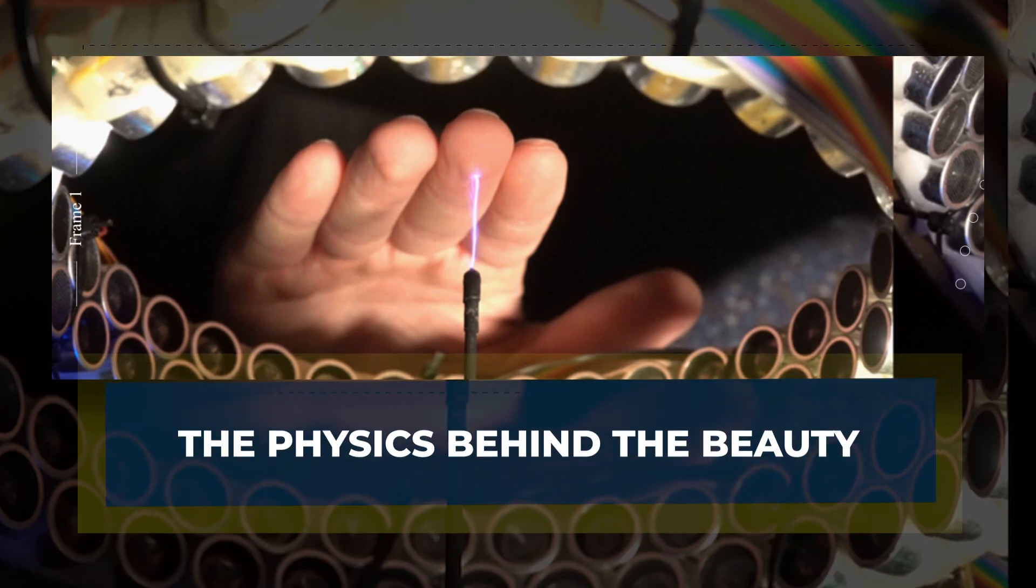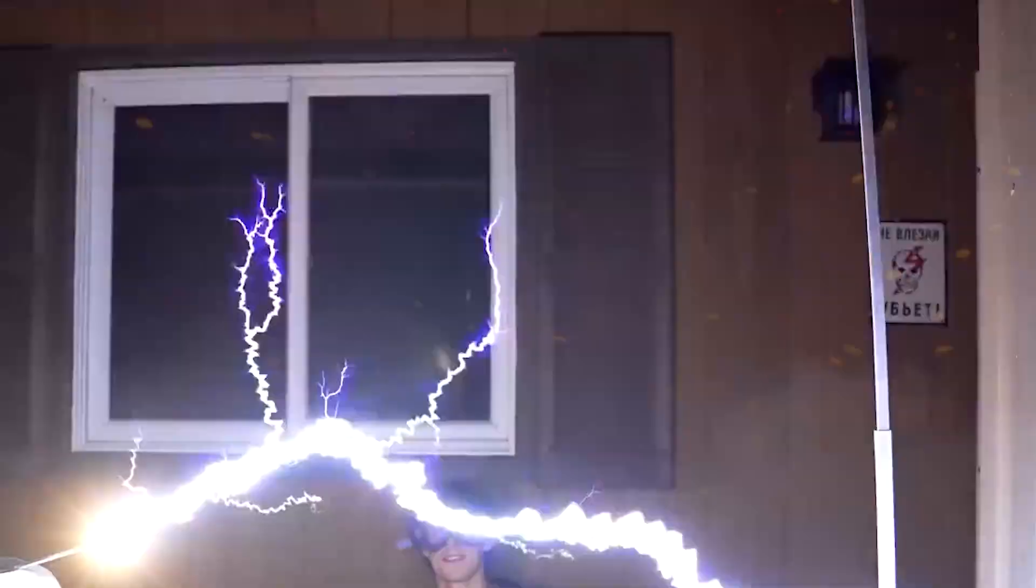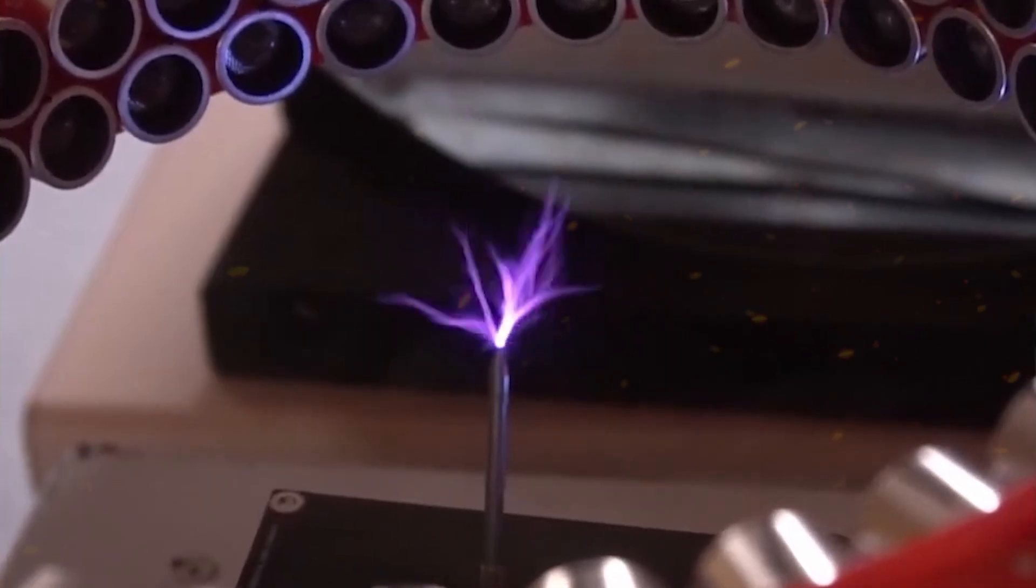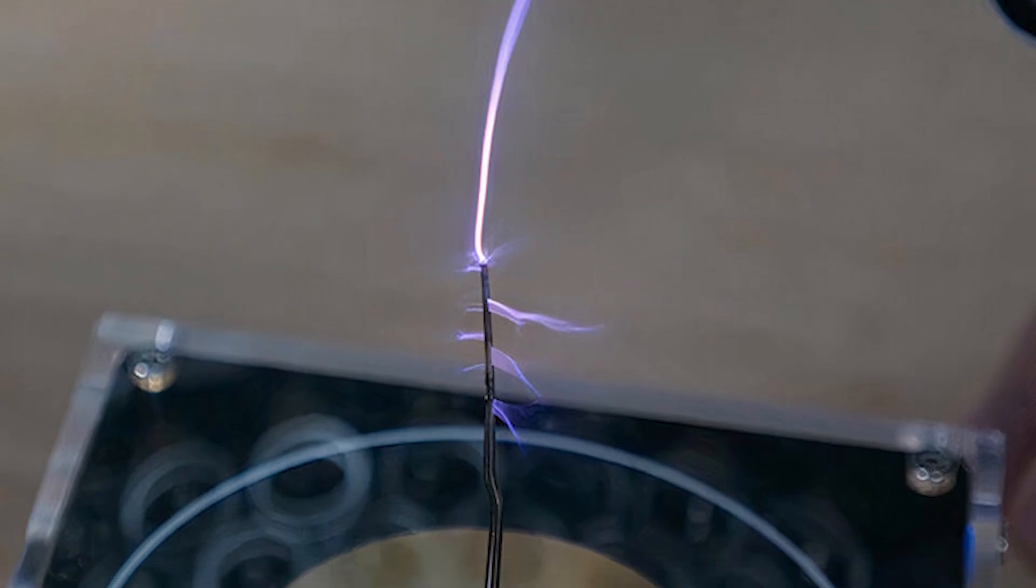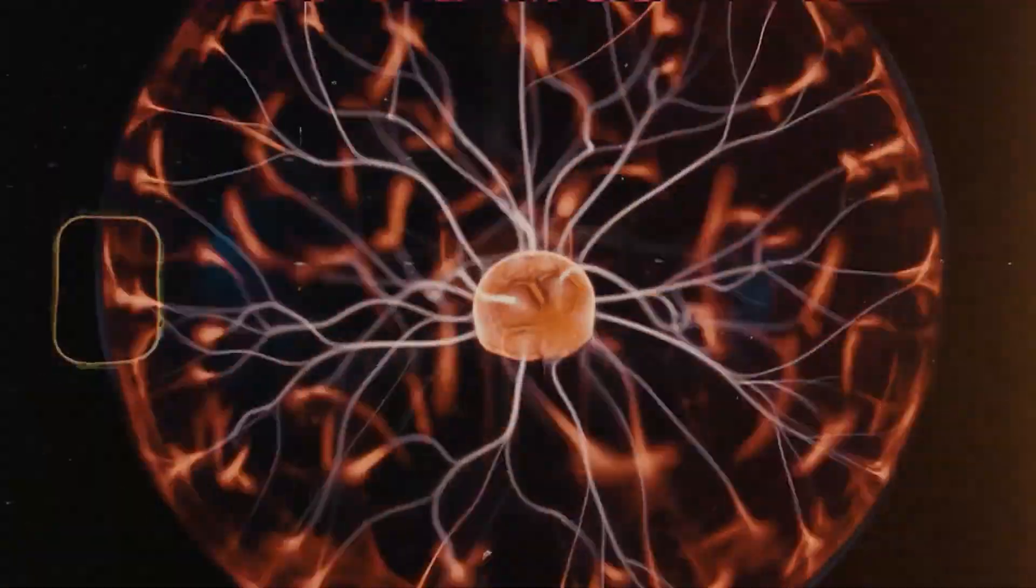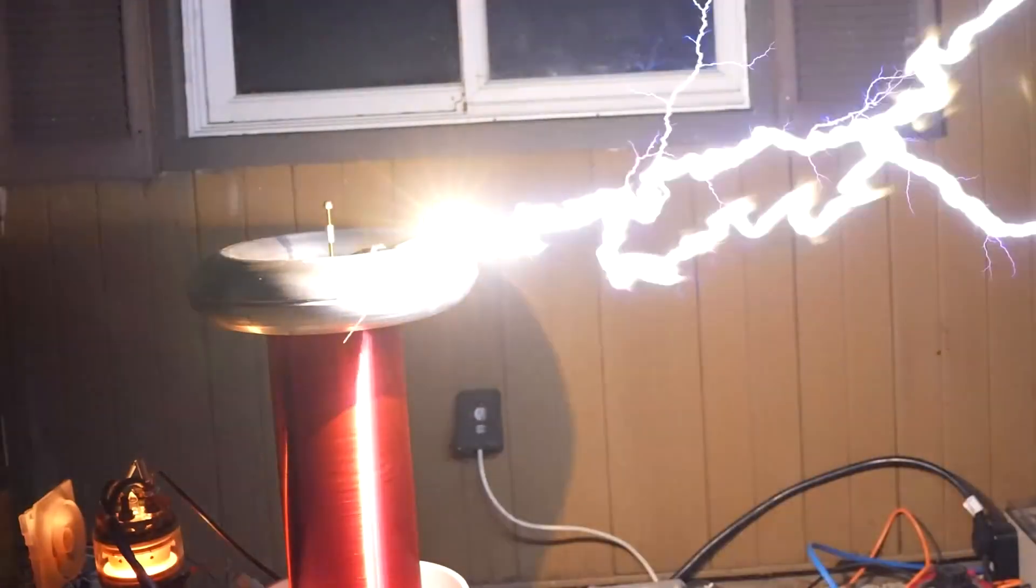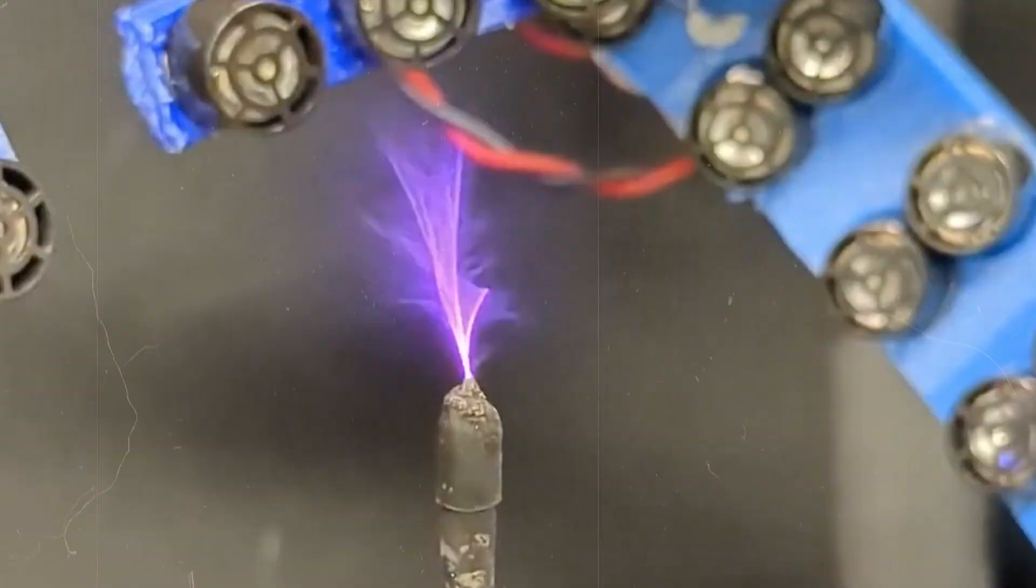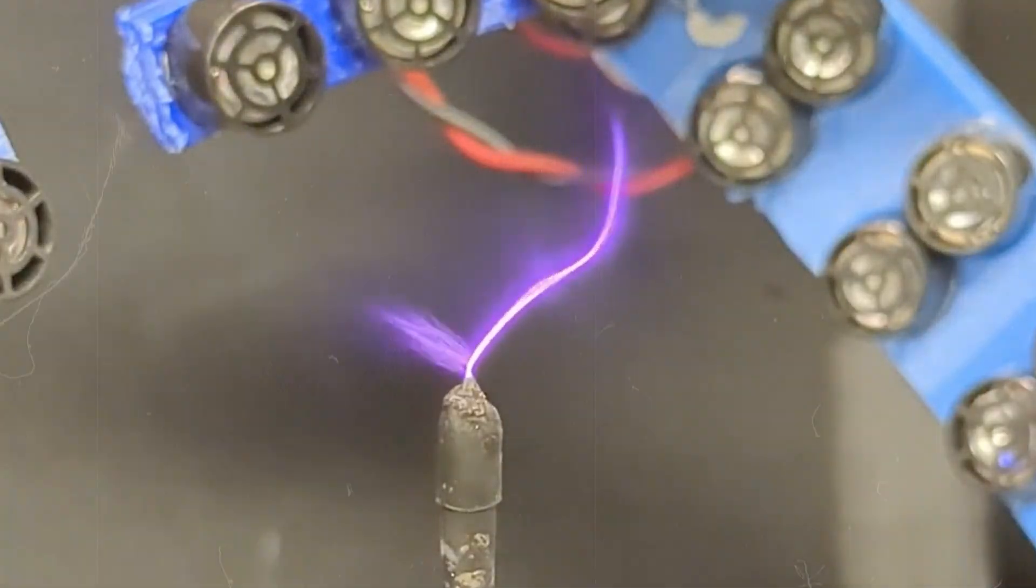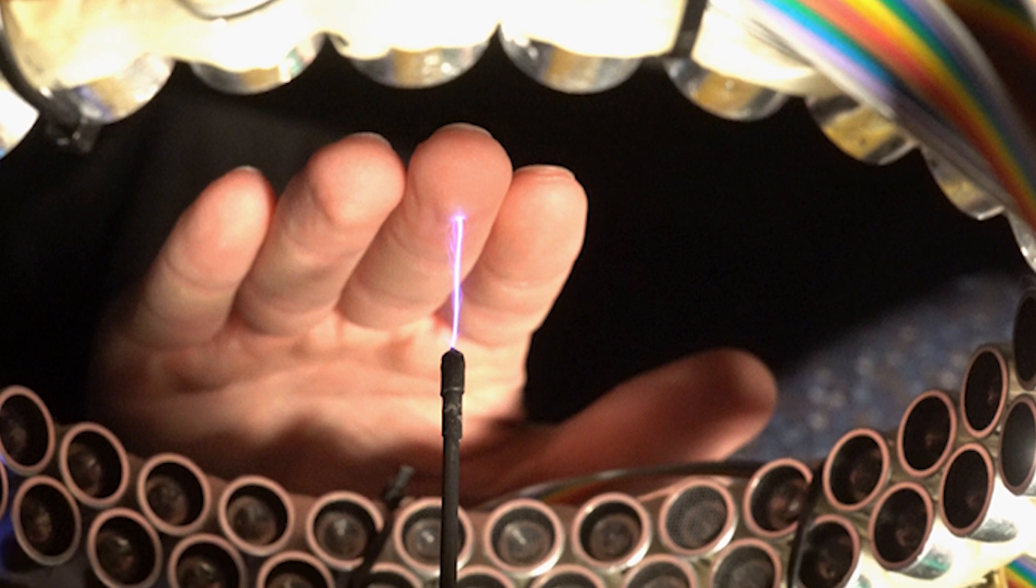The physics behind the beauty: At its heart, this experiment is a demonstration of energy interaction across scales. The ultrasonic field operates at tens of kilohertz, far below the frequencies of light, but powerful enough to move air molecules. The Tesla coil, on the other hand, operates at high voltages that excite electrons and form plasma. These two forces, mechanical vibration and electrical energy, work together. The sound waves sculpt the air, while the plasma responds to the changing air density. The result is a feedback loop, where sound guides heat, and heat guides electricity.